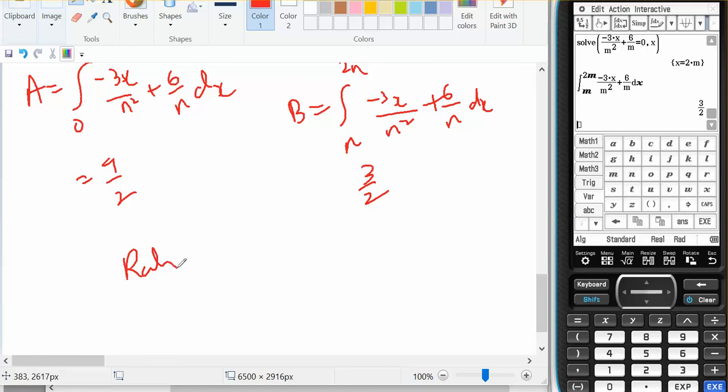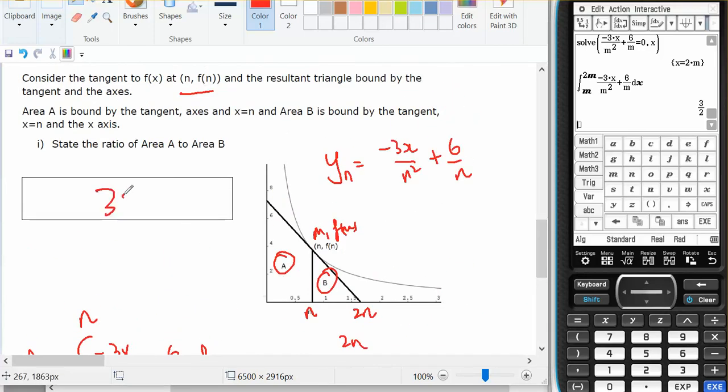Which means the ratio of A to B is 9 on 2 to 3 on 2, which is the same as 9 to 3 if I double both sides, and then divide both sides by 3. That gives me 3 to 1. So 3 to 1 is the ratio.